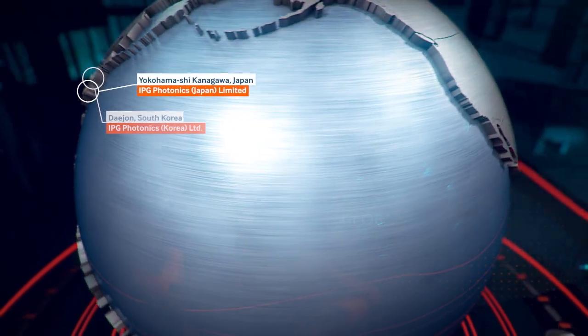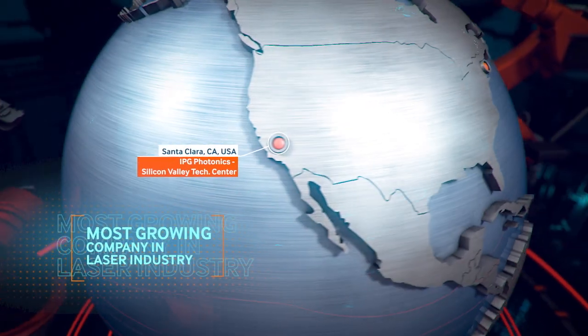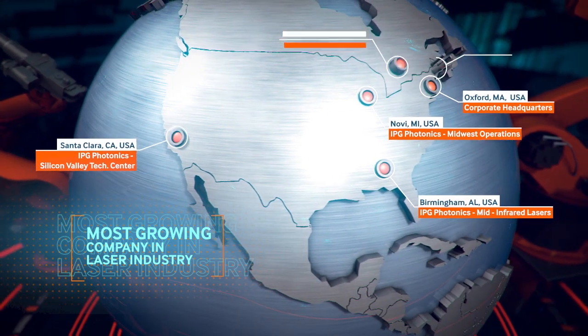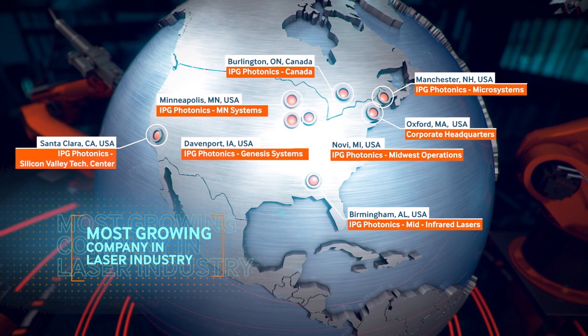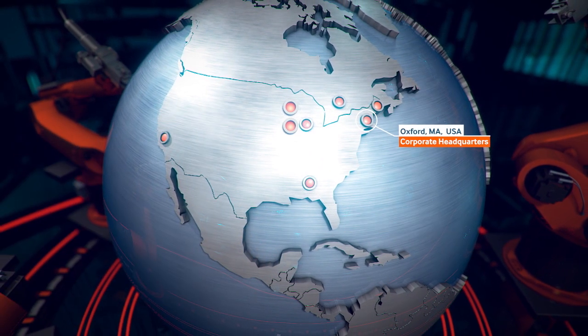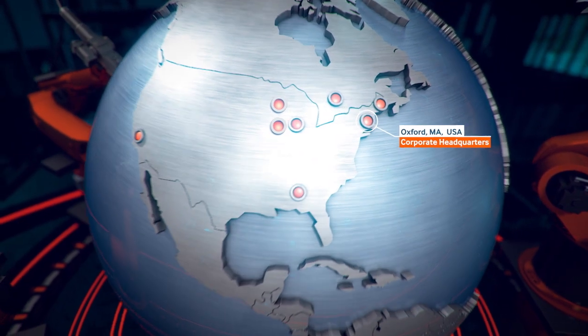Based on the results of the last several years, IPG has been recognized as being one of the fastest-growing laser technology companies in the world. The company's headquarters and its largest manufacturing facilities are located in Oxford, Massachusetts, USA.